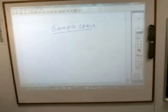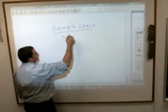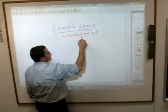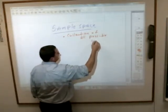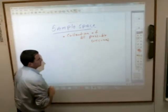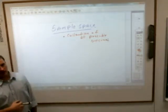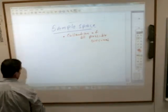A sample space, ladies and gentlemen, is the collection of all possible outcomes. And I'll explain that in just a second. The sample space is figuring out how many different combinations and writing those combinations down.